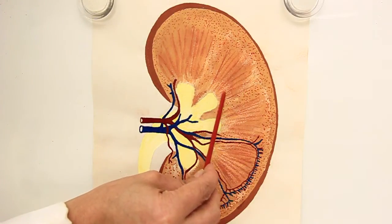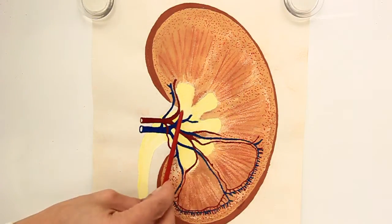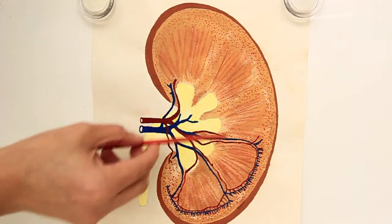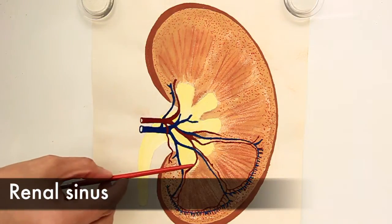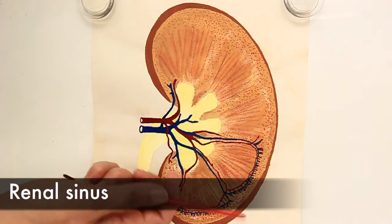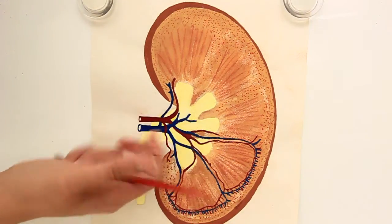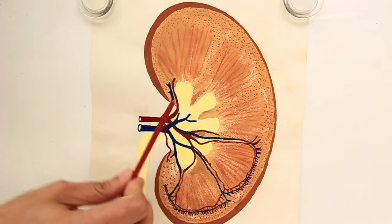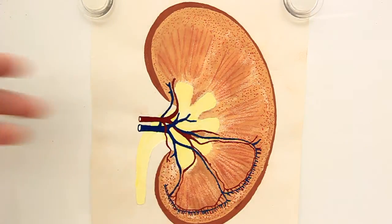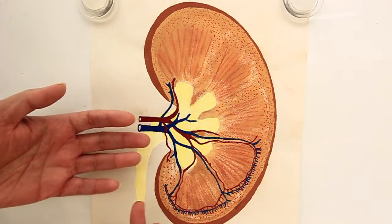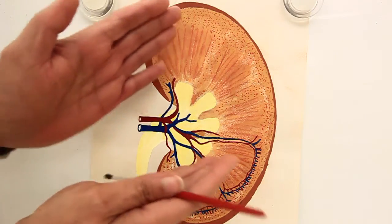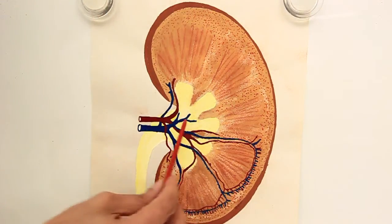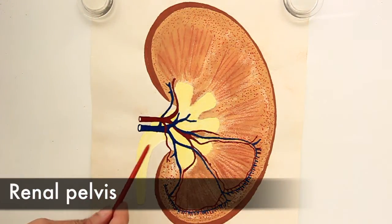After the intermediate region, we come across the innermost region which is close to the medial border of the kidney. This region is known as the renal sinus. Why renal sinus? Because it's a space that is having certain structures. First and foremost, the most obvious one, is a flattened tubular structure, which is funnel shaped. This is known as renal pelvis.